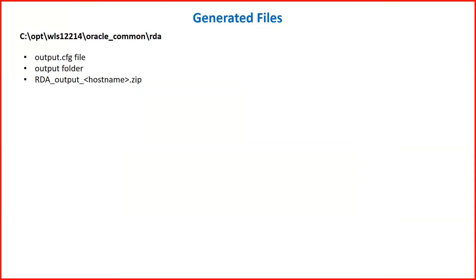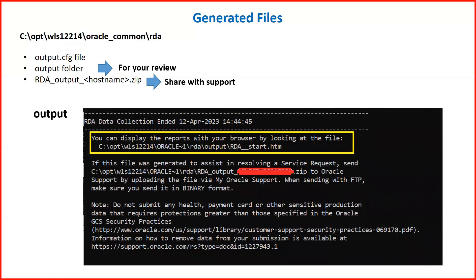Once complete, inside the RDA folder you will see three new items: an output.cfg file used by RDA to generate your domain configuration; an output folder containing all the details for analysis with HTML files you can open in a browser; and a zip file. The zip file is what you upload and attach to your My Oracle Support SR. The output folder is for your own review.